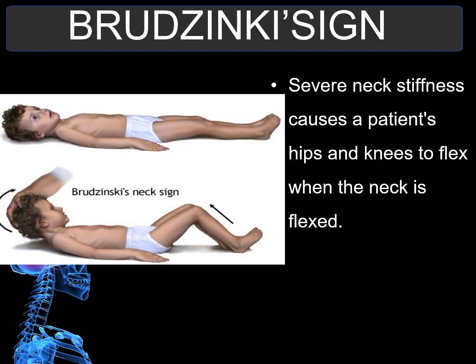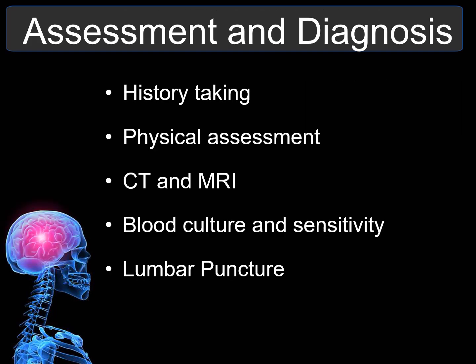Brudzinski's sign is named after Joseph Brudzinski. The test is done by placing the patient flat on the bed, and the clinician then attempts to flex the head toward the chest. The knees will flex, draw upward. Additionally, opisthotonus is the spasm of the muscles of the back, causing the head and lower limbs to bend backward and the trunk to arch forward.